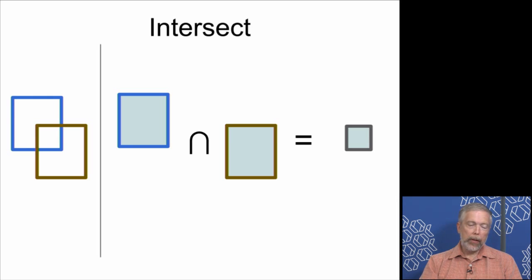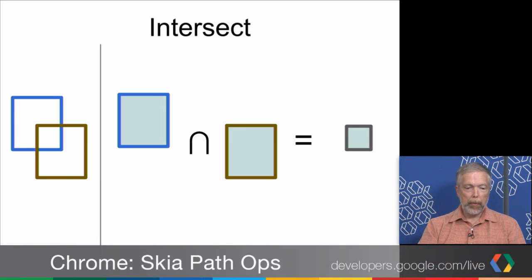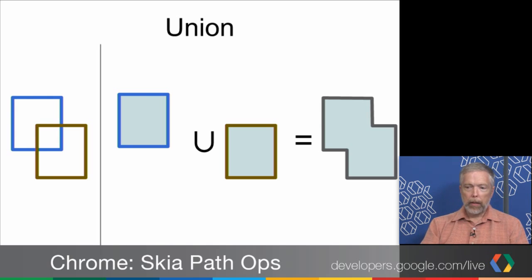PathOps also have binary operations that take a pair of paths. So in this case, we're computing the intersection of a pair of rectangles from two separate rectangles. The union operator looks a lot like the simplify operator. It uses two paths, each with a single contour, instead of one path with two contours.